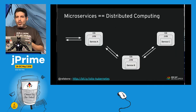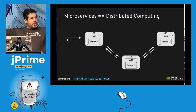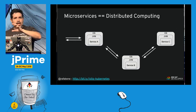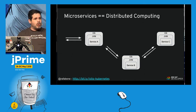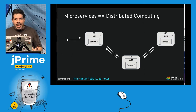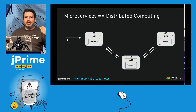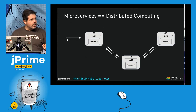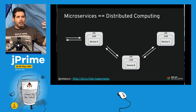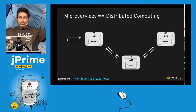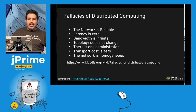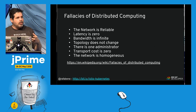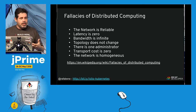Because one microservice needs to talk to another — microservice A calls B, which calls C — it's the same principle we learned at computer school: distributed computing. And when we have distributed computing, when A is talking to B, we tend to fall into some fallacies.